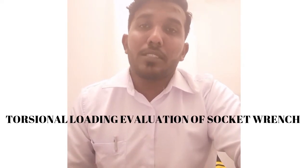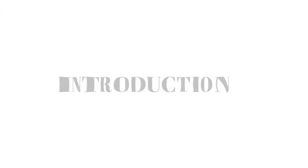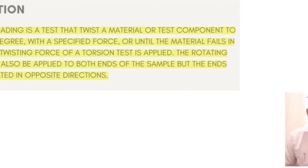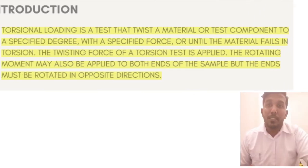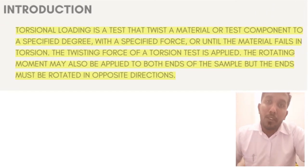So what we did was torsional loading evaluation of socket wrenches. Our introduction. Torsional loading is a test that twists the material or test component of a specified degree with a specified force or until the material fails in torsion. The twisting force of a torsion test is applied. The rotating moment may also be applied to both ends of the sample but the ends must be rotated in opposite direction.